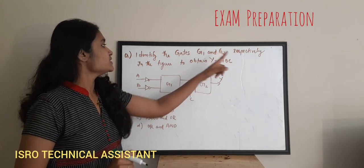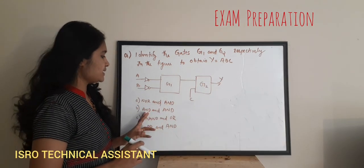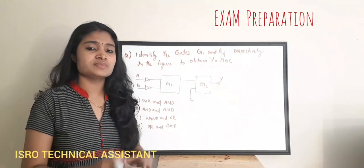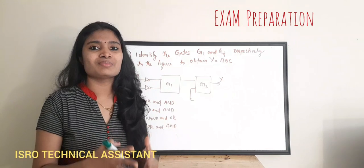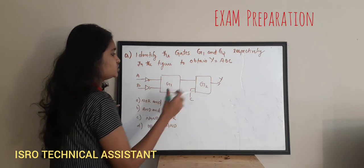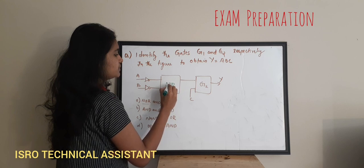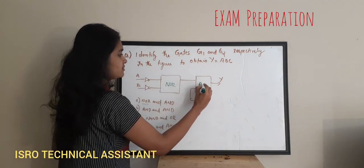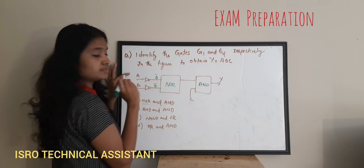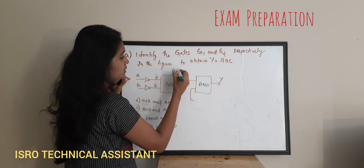Next question: identify gates G1 and G2 in the figure to obtain Y = A·B·C. The combinations given are: NOR and AND, AND and AND, OR and AND. The approach is to try the options. Taking option A — G1 as NOR and G2 as AND — the NOR gate receives inputs A and B, giving output (A+B)̄, which equals Ā·B̄ by De Morgan's law. Wait — applying De Morgan's: (Ā+B̄)̄ = A·B.